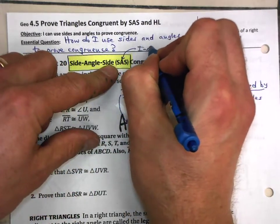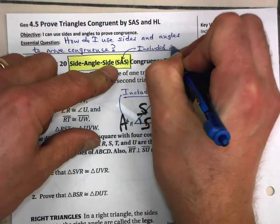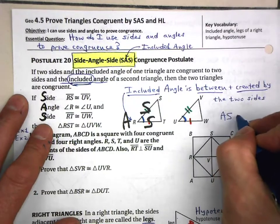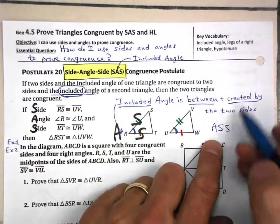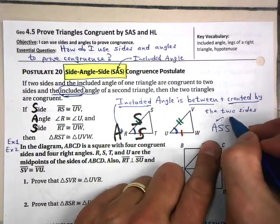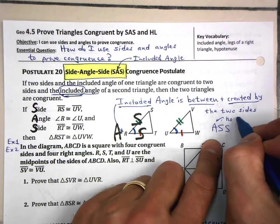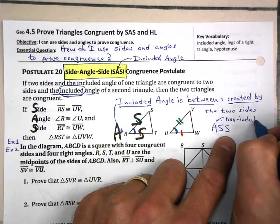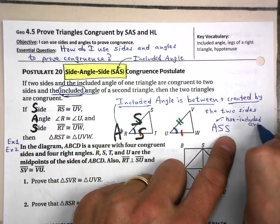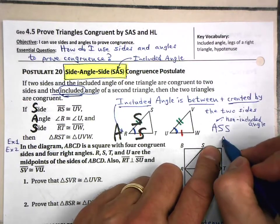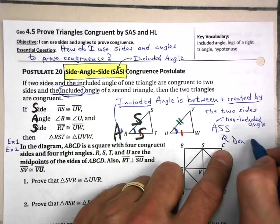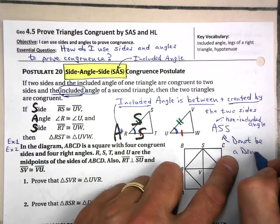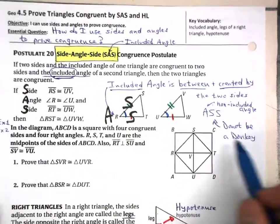Write "included angle" there. Because if you had ASS, that angle is the non-included angle, and that is a bad word. Do not be a donkey.